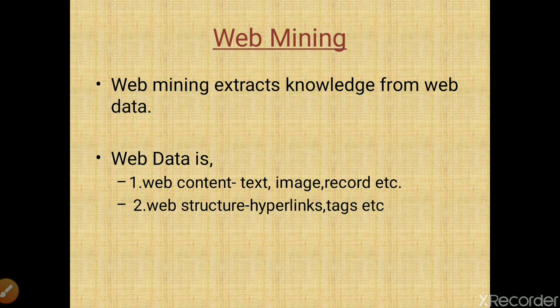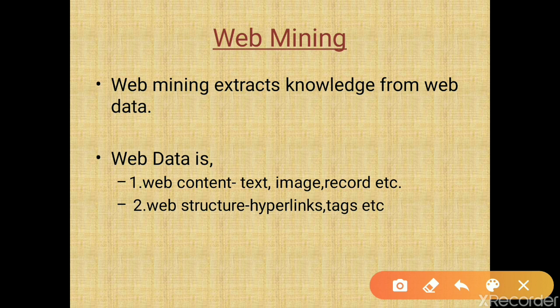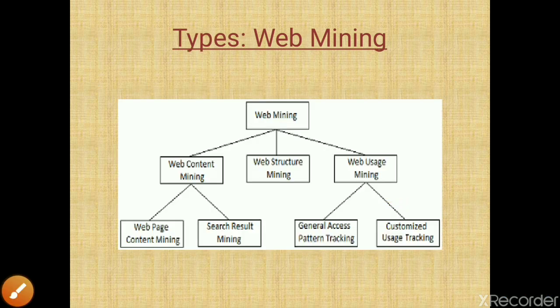Web data is of two types: it may be either web content or web structure. Web content may contain text, images, records, etc. Web structure contains hyperlink tags and so on. In web mining, we mine from web data which may be either web content or web structure — for example, extracting an image from a web page or using a hyperlink to navigate to another page.